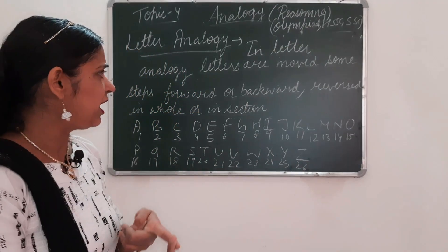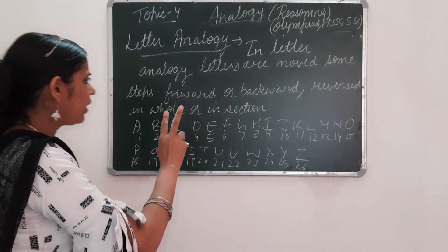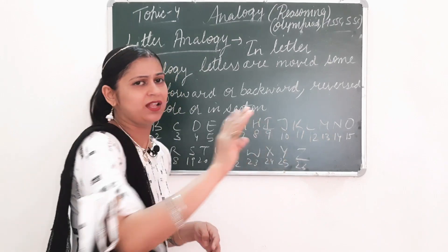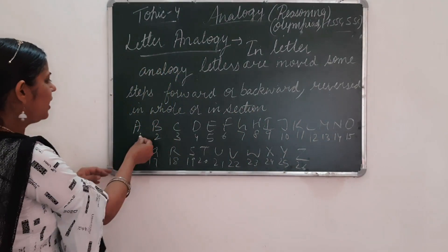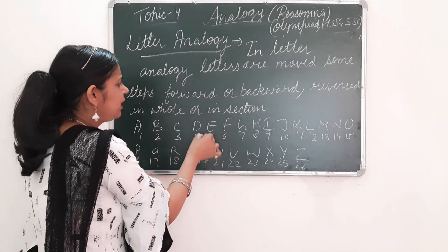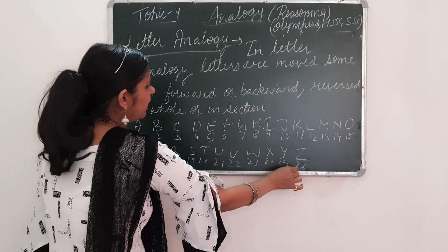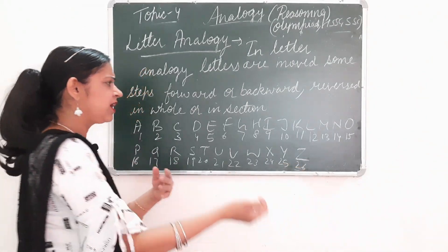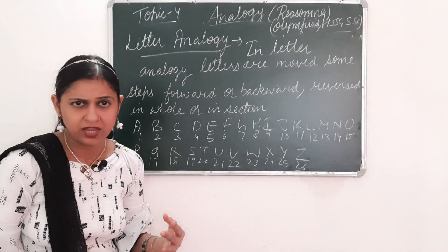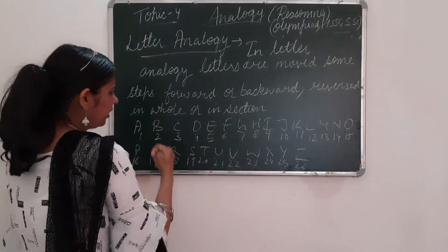In letter analogy, you have to remember the numbering of A to Z. For example: A=1, B=2, C=3, D=4, E=5, up to Z=26. You also need to remember the reverse numbering — for example, the reverse of A is Z.